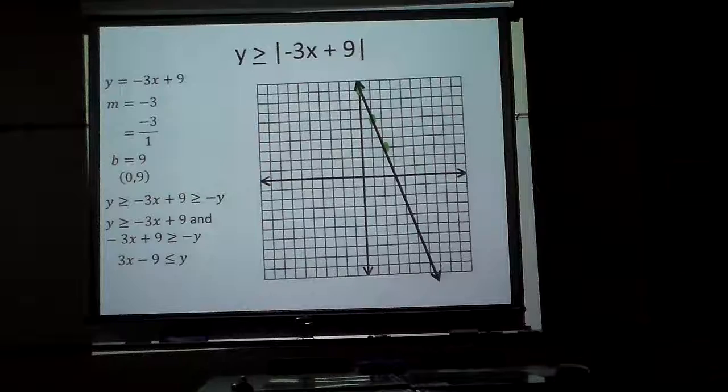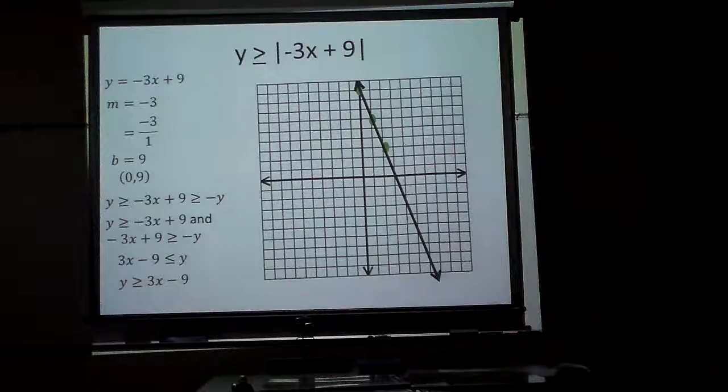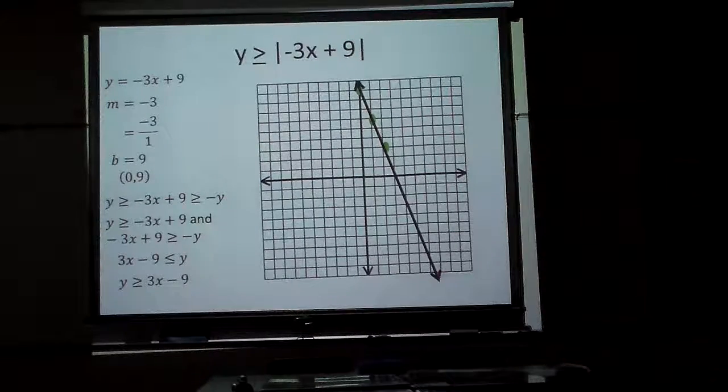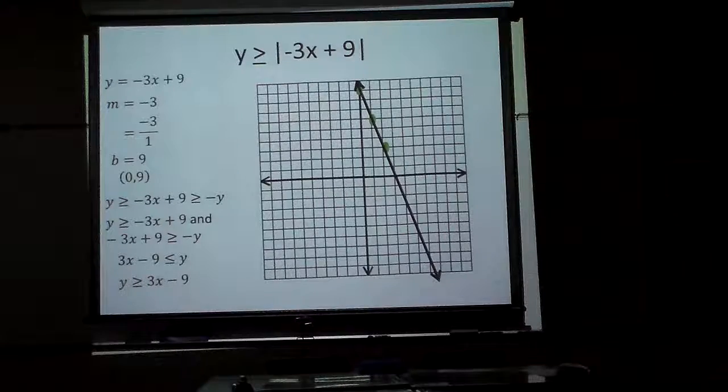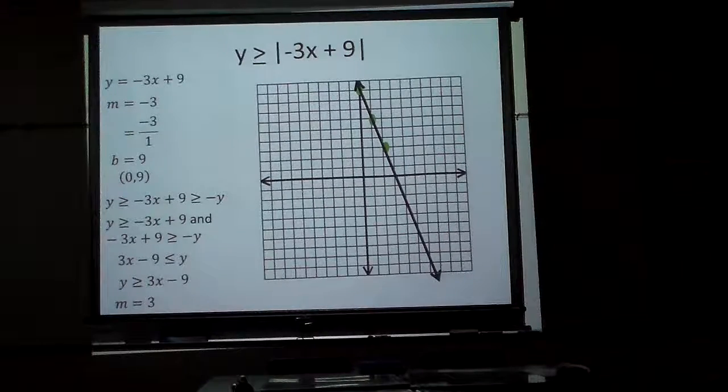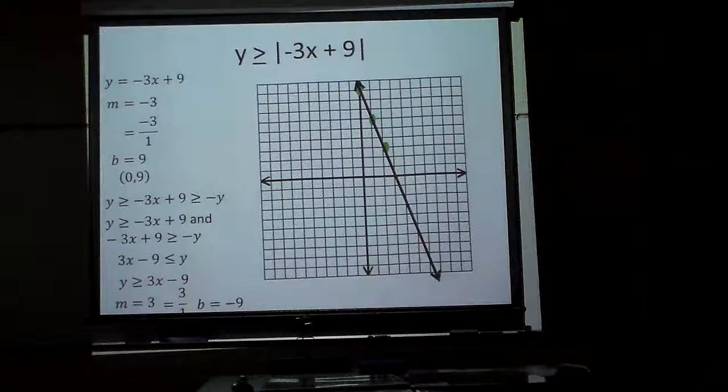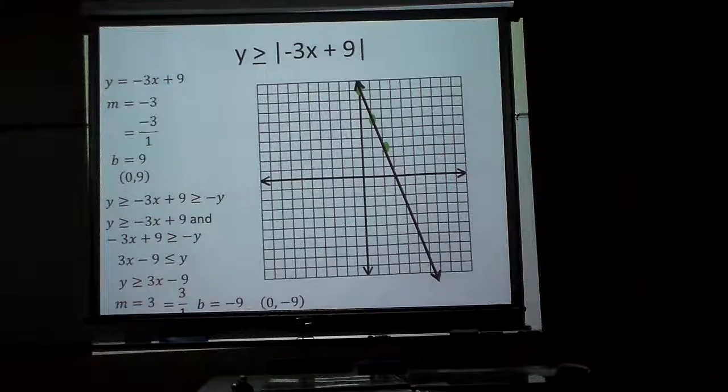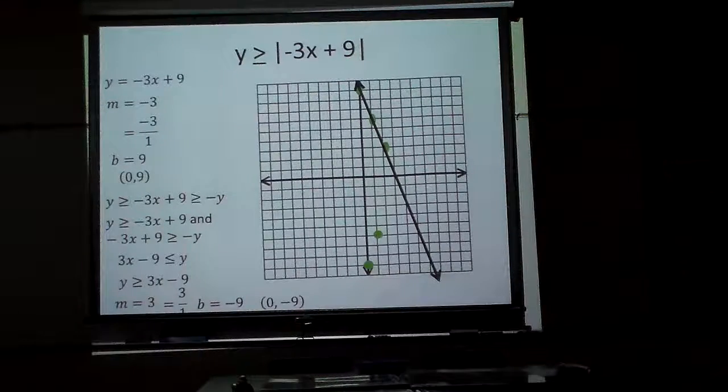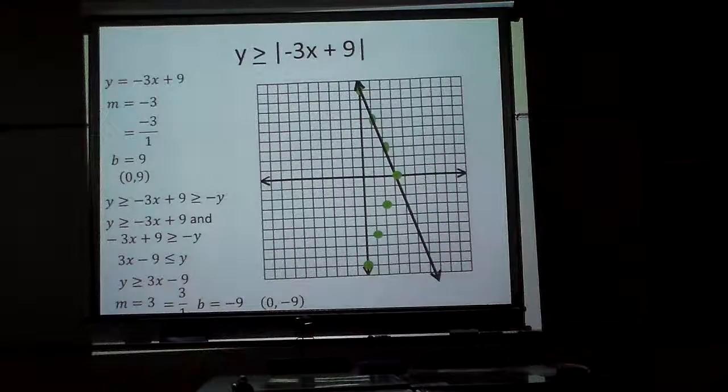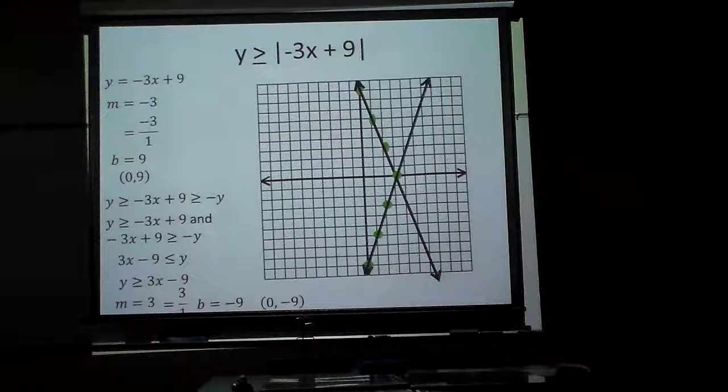And now then I would, to graph this one, or I could write it this way, I still have 3x minus 9, meaning I'm going to start down at 3, and it's 3 over 1, or my y intercept's at negative 9, and put a dot there, go up 3 over 1, up 3 over 1, and still graph it. And notice, look, it's going to cross right there.